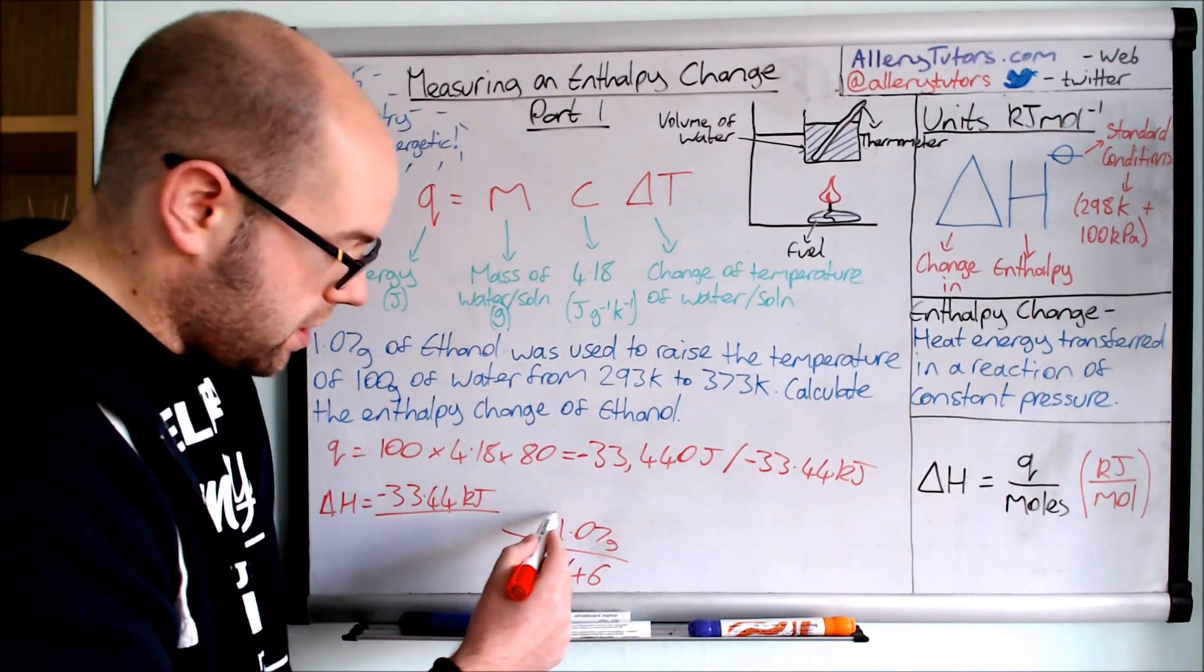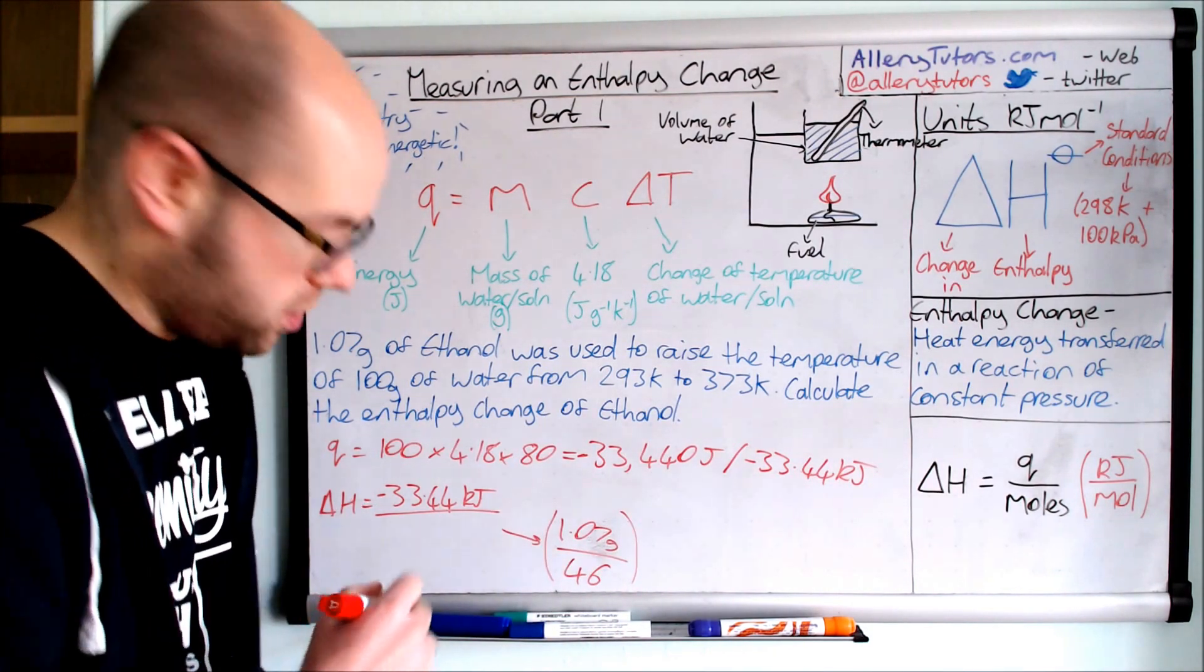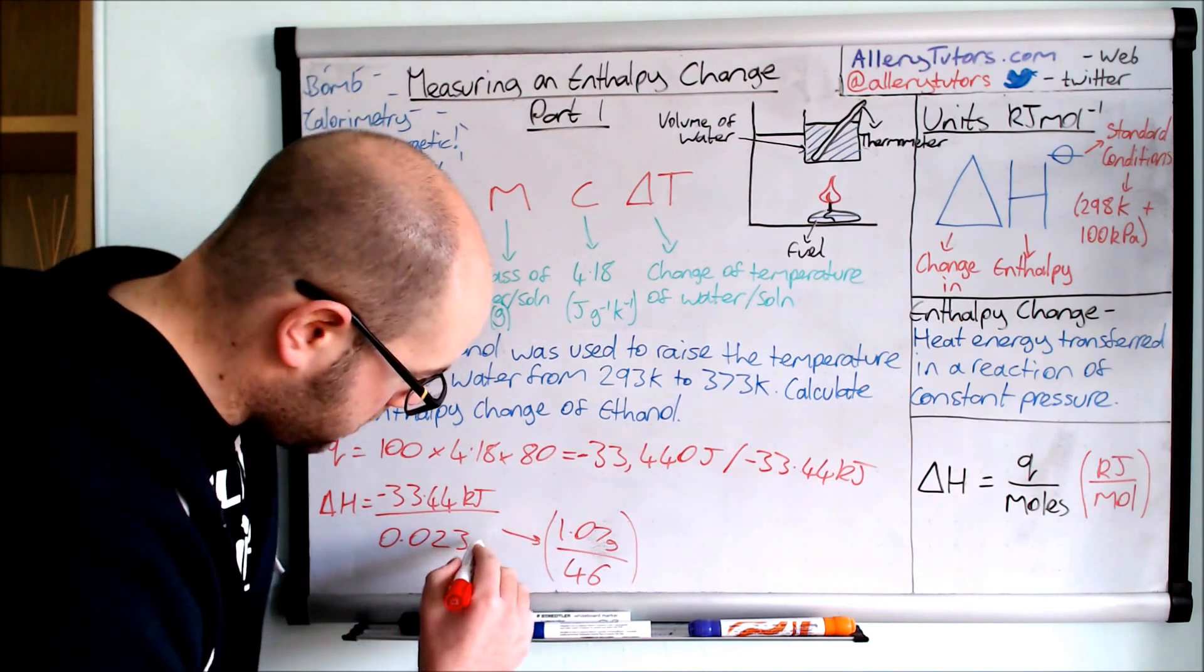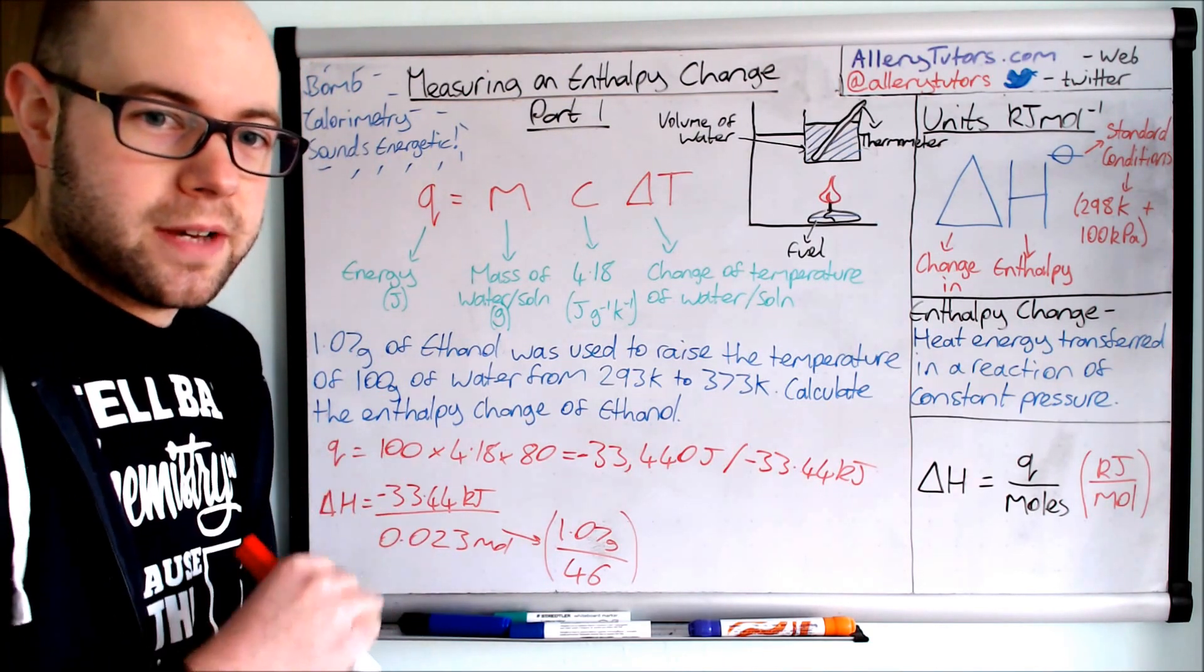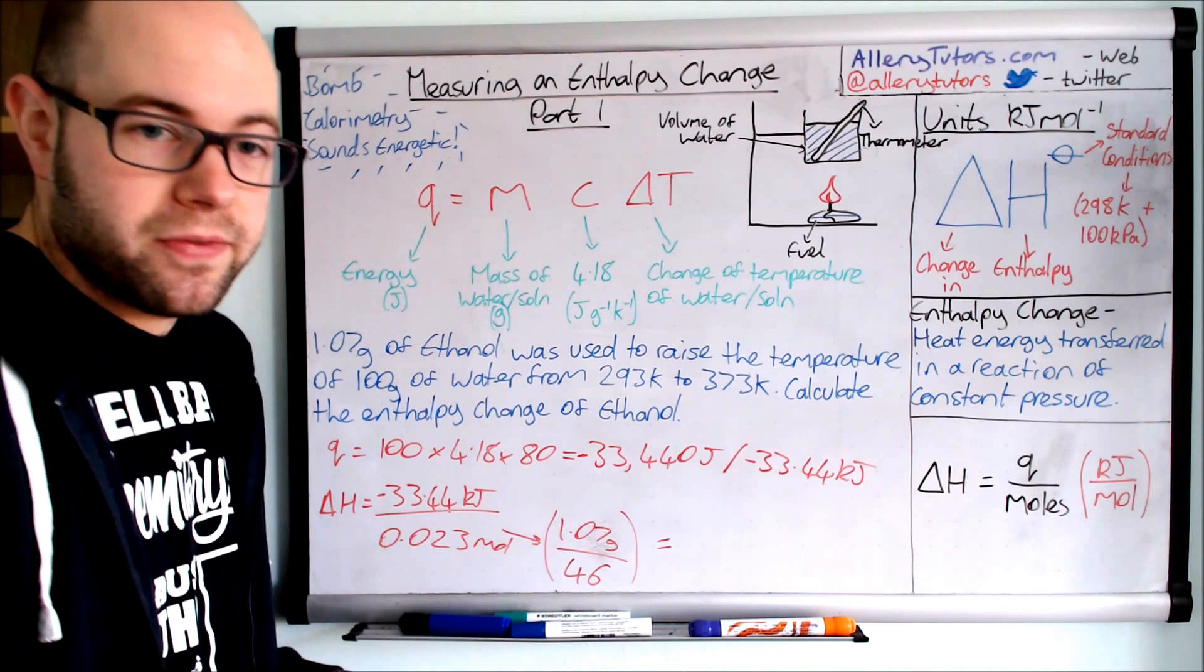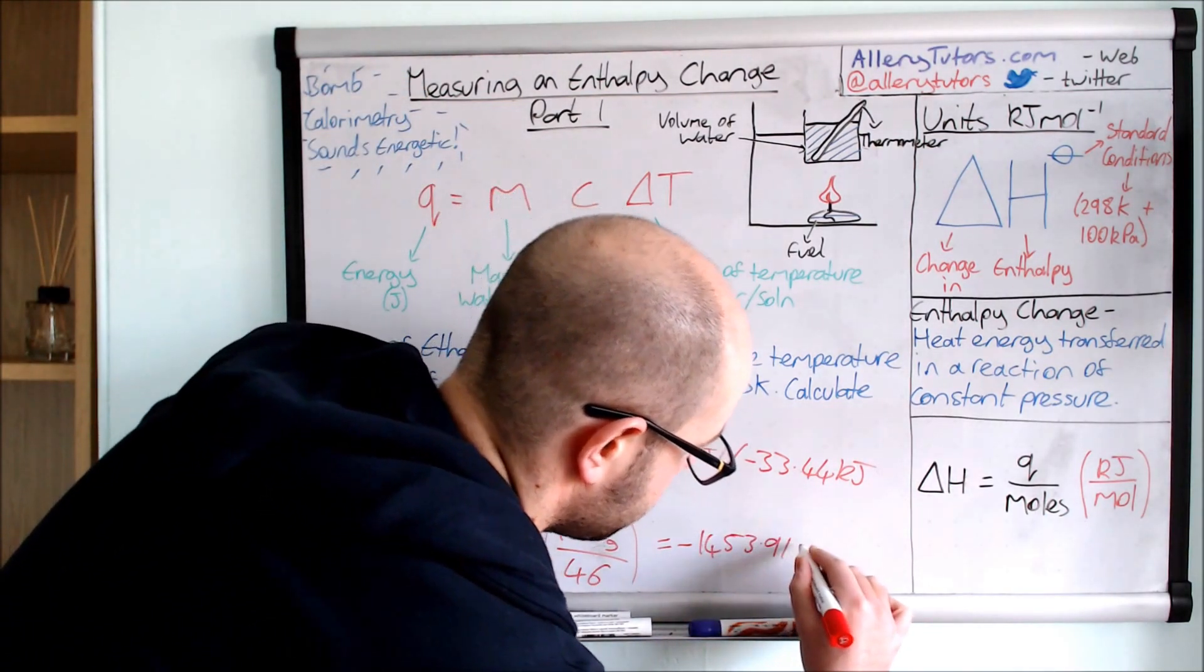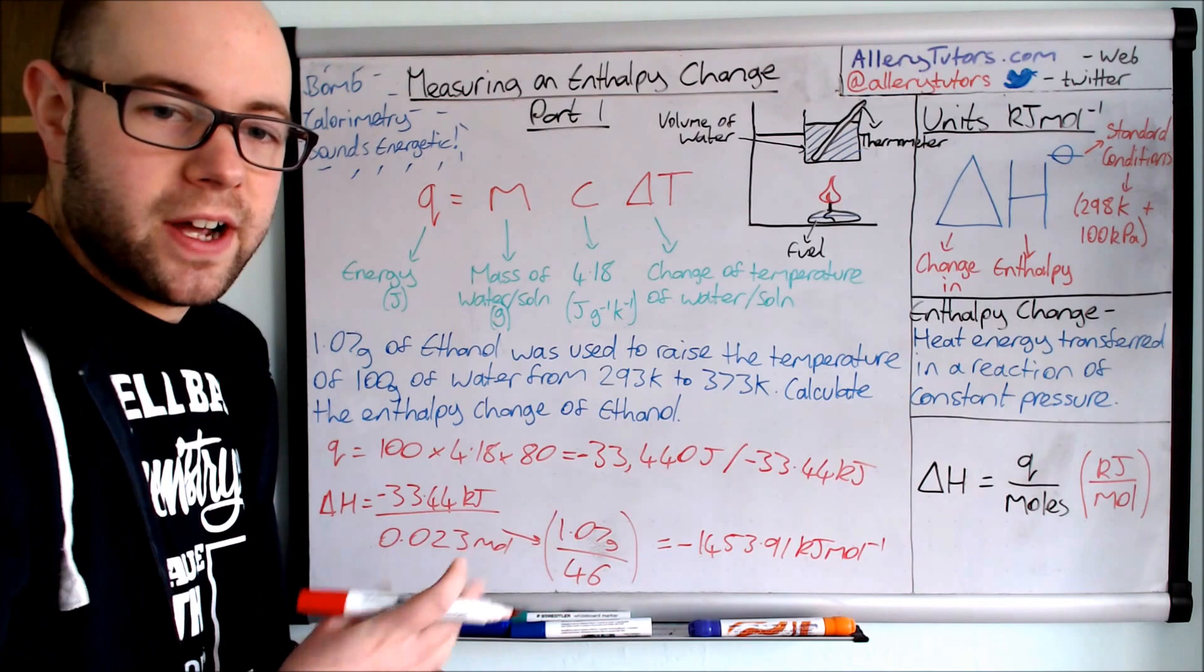Okay there we go, and this tells us the number of moles that we need to work out. So if we put that into our calculator we should get 0.023. So there's our enthalpy change which is the kilojoules per mole, and this is in moles. Again if you think about the units kilojoules per mole, it kind of prompts you, you must have an energy value and you must have the number of moles. And then if we stick that in our calculator we should come out with a final value, again it's got to be negative because it's exothermic, of -1453.91, and this is kilojoules per mole.